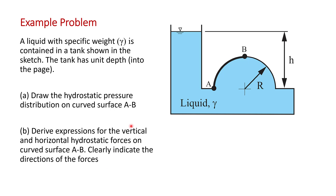So here we have another problem. This one's done all in symbolic form. I really recommend that you work in symbolic form before you plug numbers in — you'll get much more marks that way. We're after figuring out the horizontal and vertical forces on this section of curved surface AB. This surface has radius R, and the bottom of this semicircular surface has a depth in the fluid of H. We're going to take the tank as having unit depth into the page, so this is a two-dimensional problem.